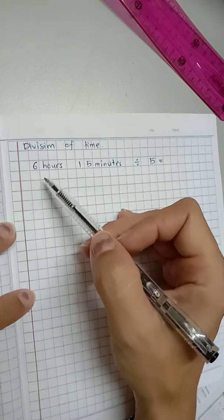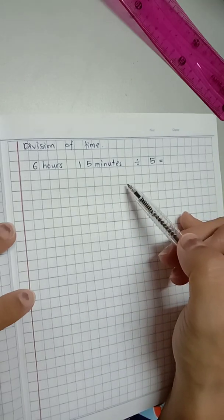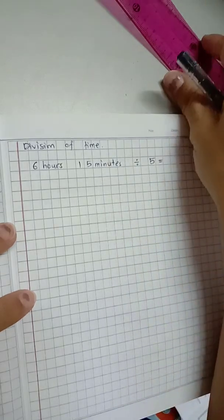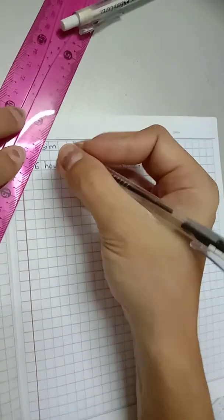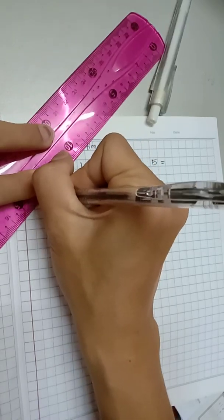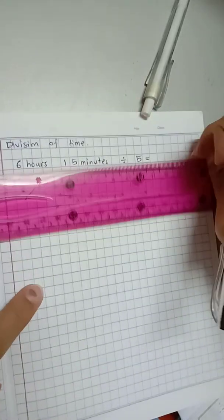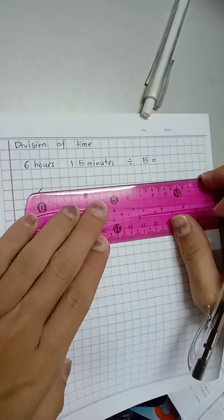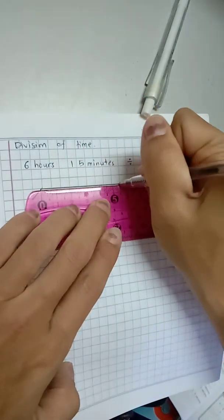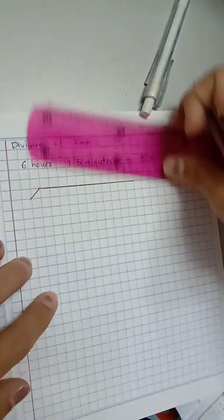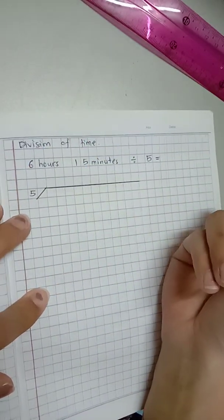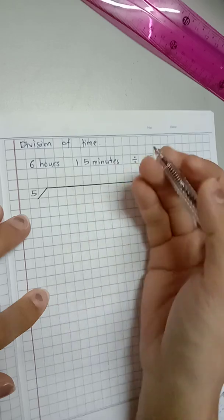So we're going to use the long division to do the calculation. 6 hours and 15 minutes will be inside. 5, divide by 5 is outside, and the time will be inside.